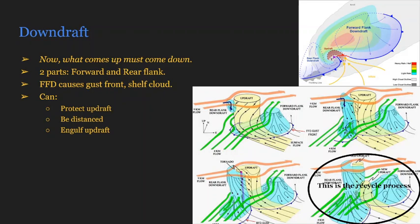If there is a tornado that is occurring during this recycle process, it will likely wane in strength or will completely dissipate entirely until that updraft is able to start another tornado.